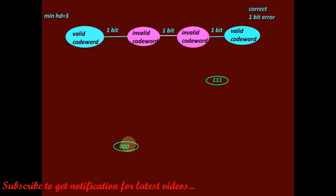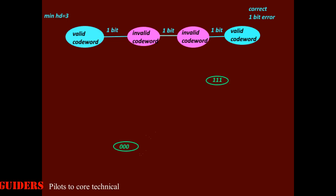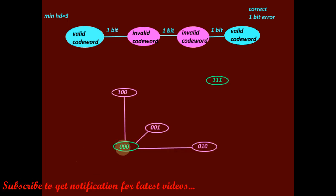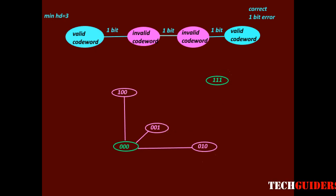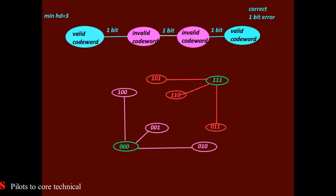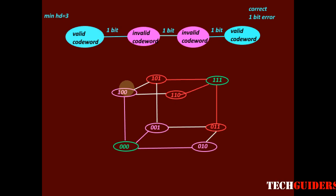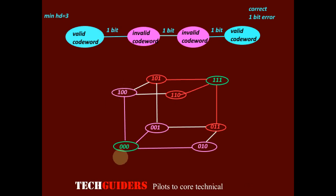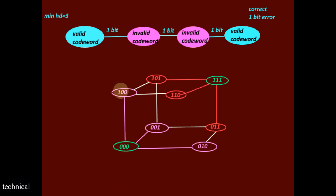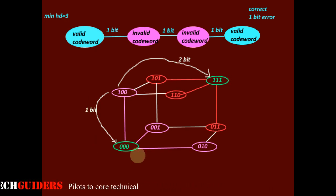For example, let 000 and 111 be two valid codewords whose Hamming distance is 3. The words produced by a 1-bit error on 000 do not overlap with the words produced by a 1-bit error on 111. There is at least a distance of 1 between these invalid codewords. So if we detect a 1-bit error, we can correct it by identifying the actual codeword. For example, if 100 is the received invalid codeword, it is 1 bit away from 000 and 2 bits away from 111, so it must have come from 000.